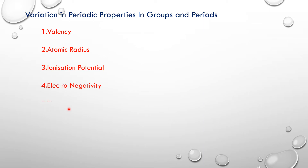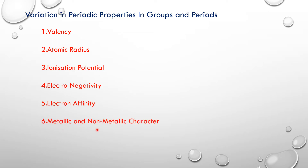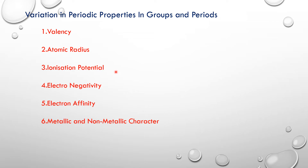The fifth property is electron affinity, and the sixth one is metallic and non-metallic character. How do these properties change in periods and groups? The change in properties of elements is due to the arrangement of electrons in various shells.